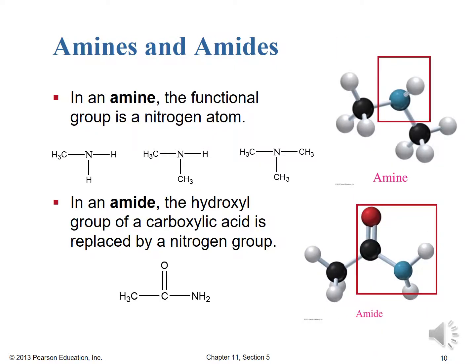Amines and amides both have a nitrogen contained in their functional group. In an amine, the functional group is a nitrogen atom bonded to at least one carbon group. In the far left example, we have methylamine, which is a primary amine — just one nitrogen-carbon bond. In the middle, we have dimethylamine with two nitrogen-carbon bonds and then a nitrogen-hydrogen bond — that would be a secondary amine. And then finally, we have trimethylamine, a tertiary example, where the nitrogen is bonded to three methyl groups. In the case of an amide, the hydroxyl group of a carboxylic acid is replaced by a nitrogen group — so it's C double-bond O and then a single bond to an N, which can be bonded to hydrogens or other carbon groups.